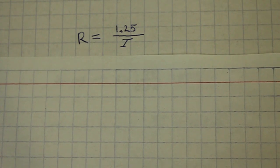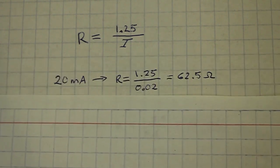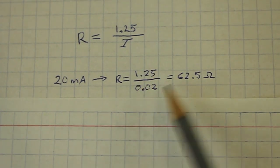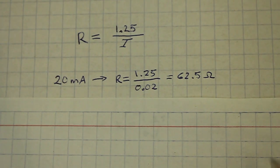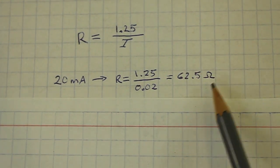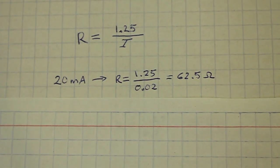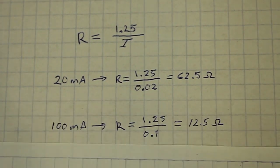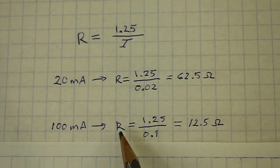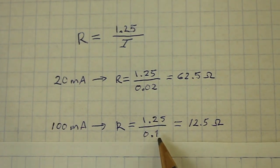So, for example, if we want to drive an LED at 20 milliamps, then we divide 1.25 over 0.02 amps and this gives a value of 62.5 ohms. Therefore, if we want a current of 20 milliamps, we need to add this resistor to the circuit. And if we want 100 milliamps or 0.1 amps, then the resistor needed is 1.25 divided by 0.1 and this gives a value of 12.5 ohms.